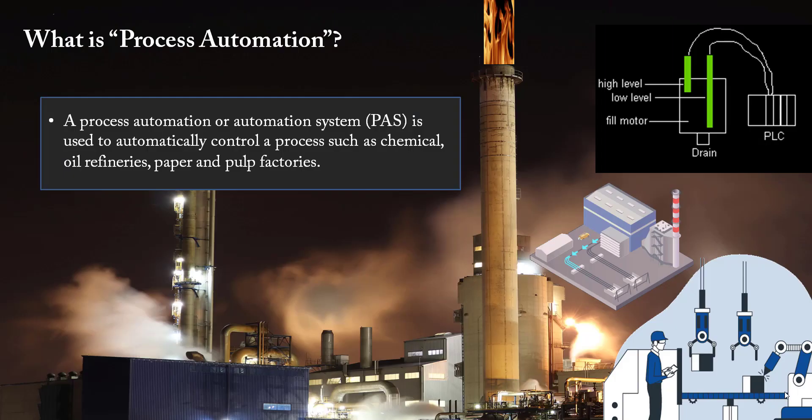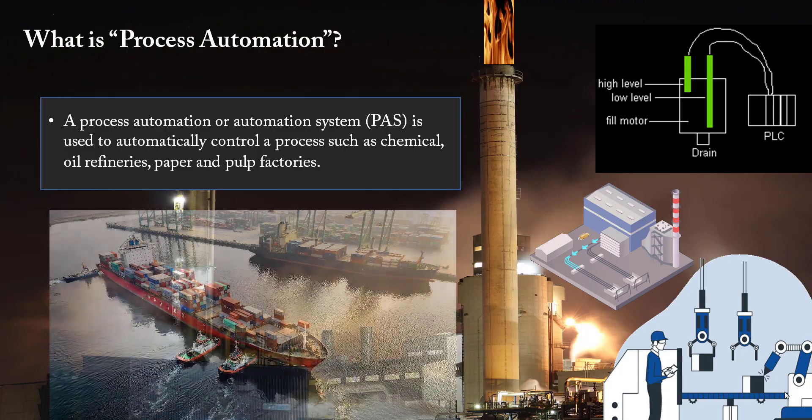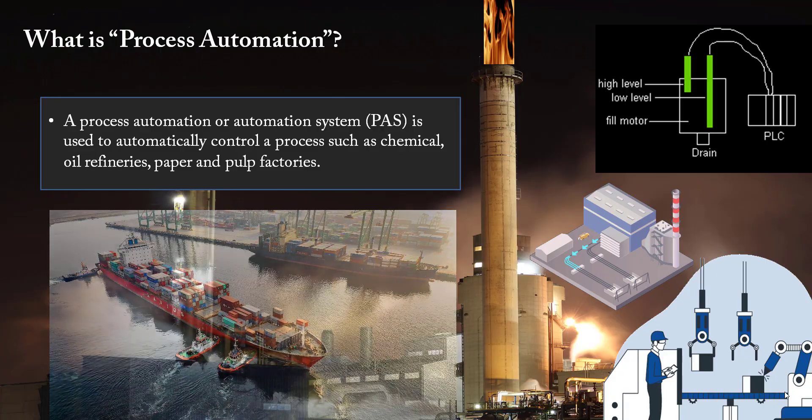Now let's talk about today's topic: what is process automation. Process automation systems are used to automatically control processes such as chemical, oil and gas, fertilizer, and different process industries.